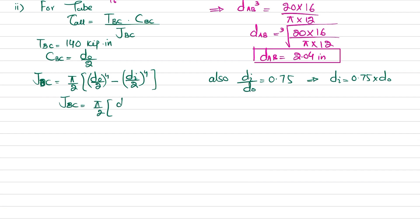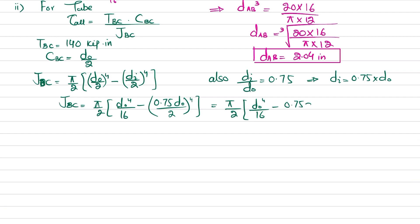Substituting d_inner = 0.75·d_outer into J_BC: J_BC = (π/2)·[d_outer⁴/16 − (0.75·d_outer)⁴/16]. Simplifying further: J_BC = (π/2)·(d_outer⁴/16)·[1 − 0.75⁴], which gives J_BC = 0.06711·d_outer⁴.